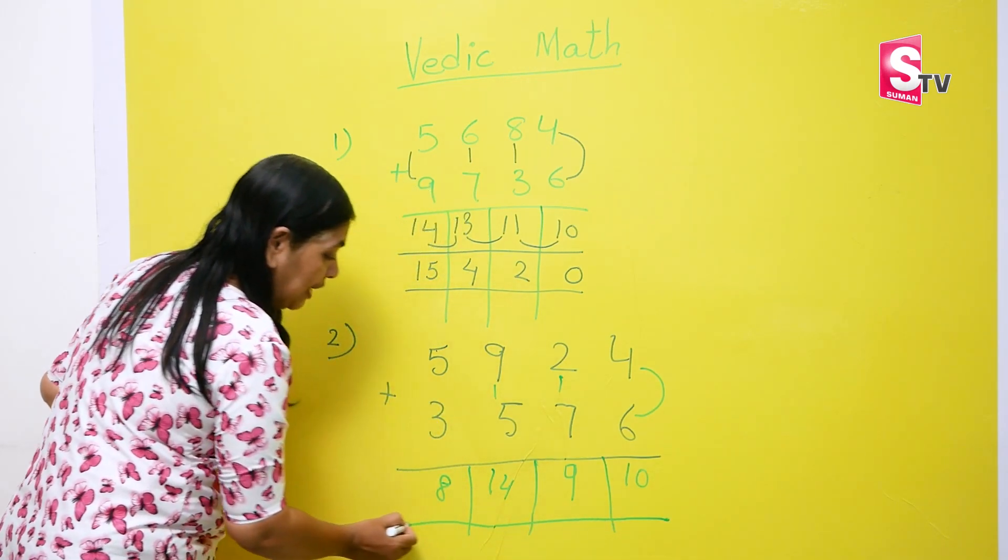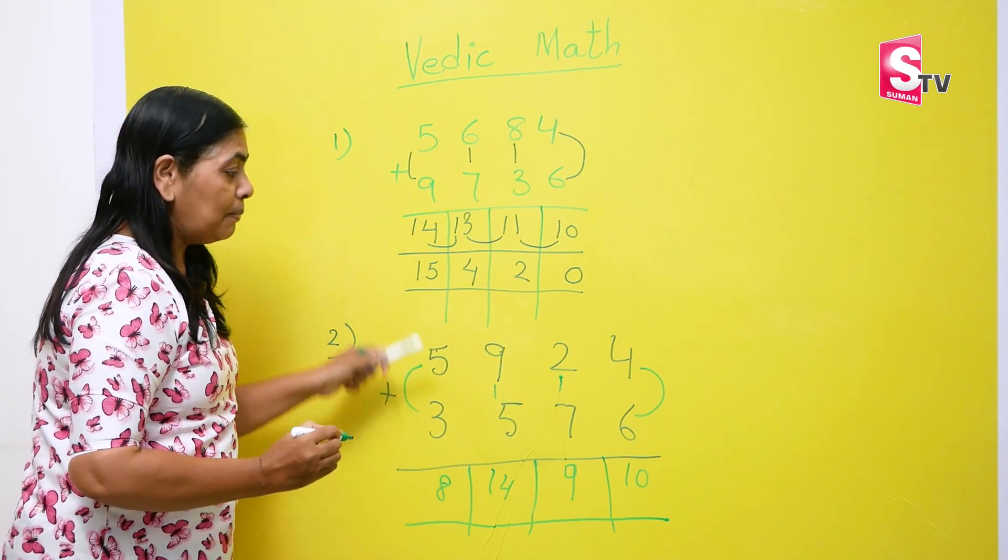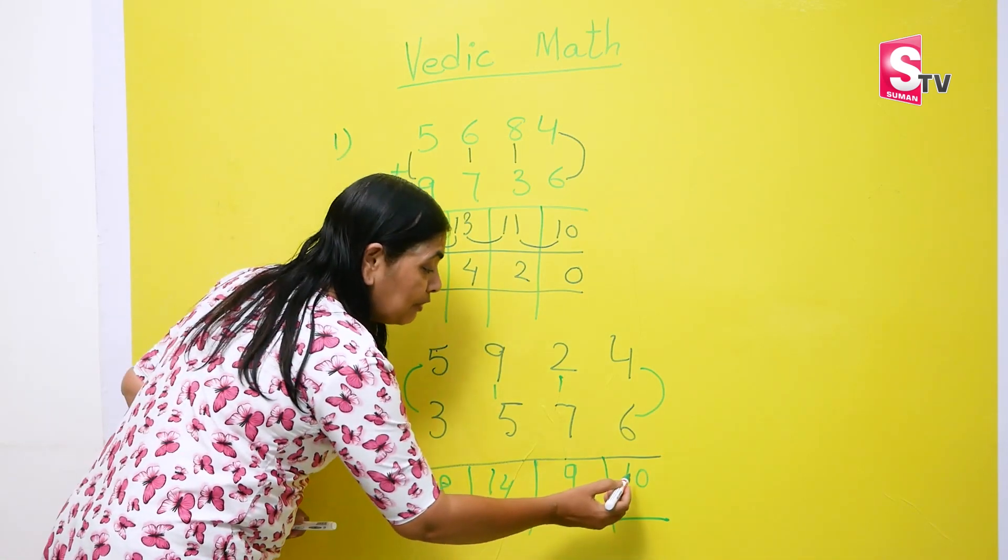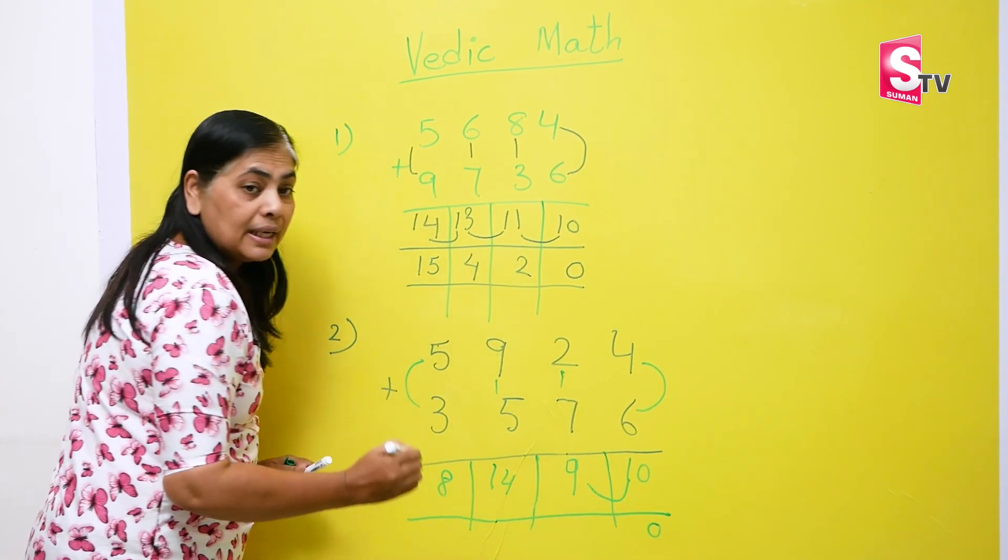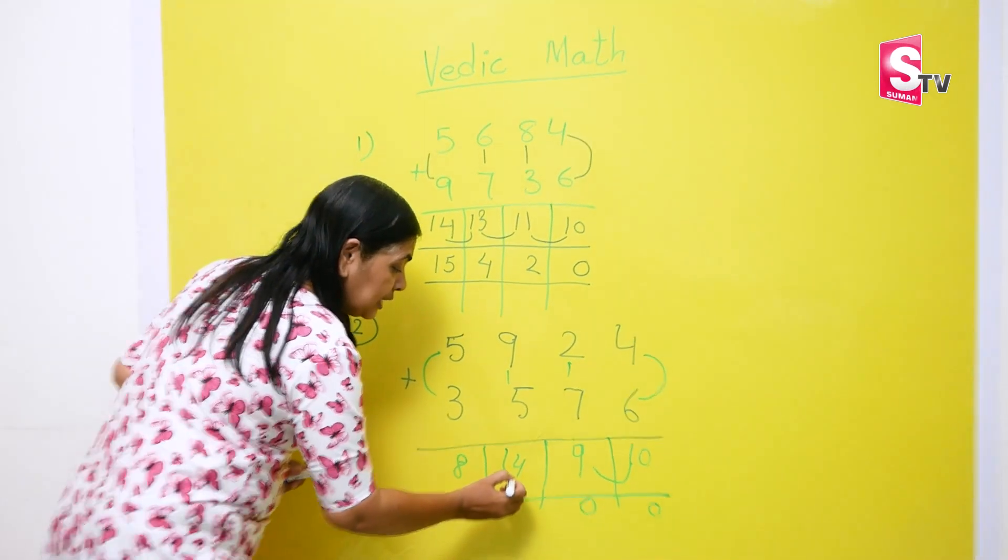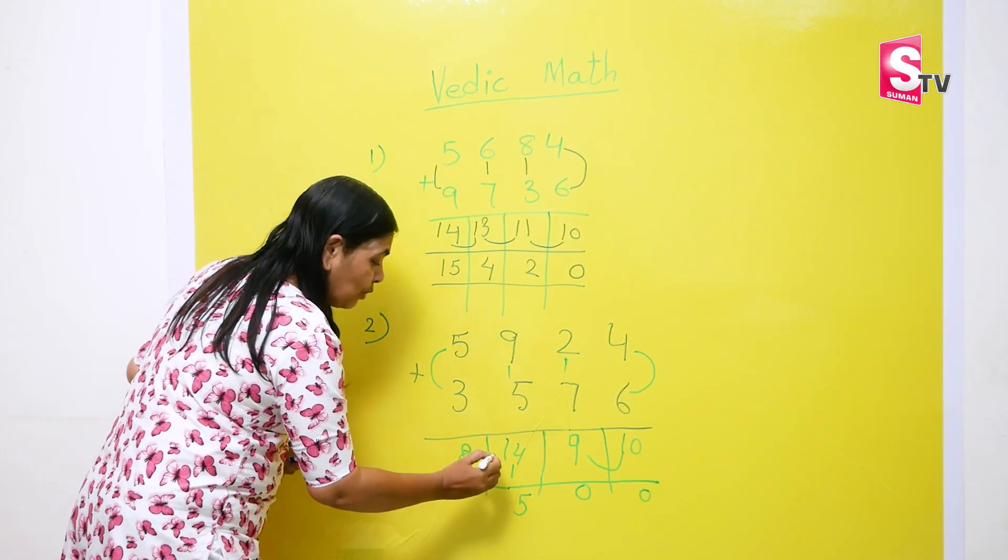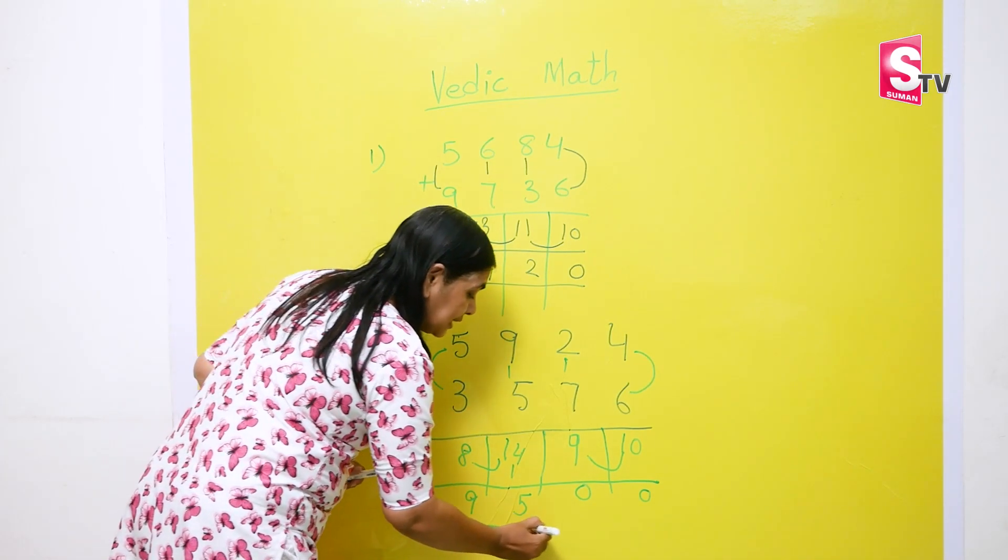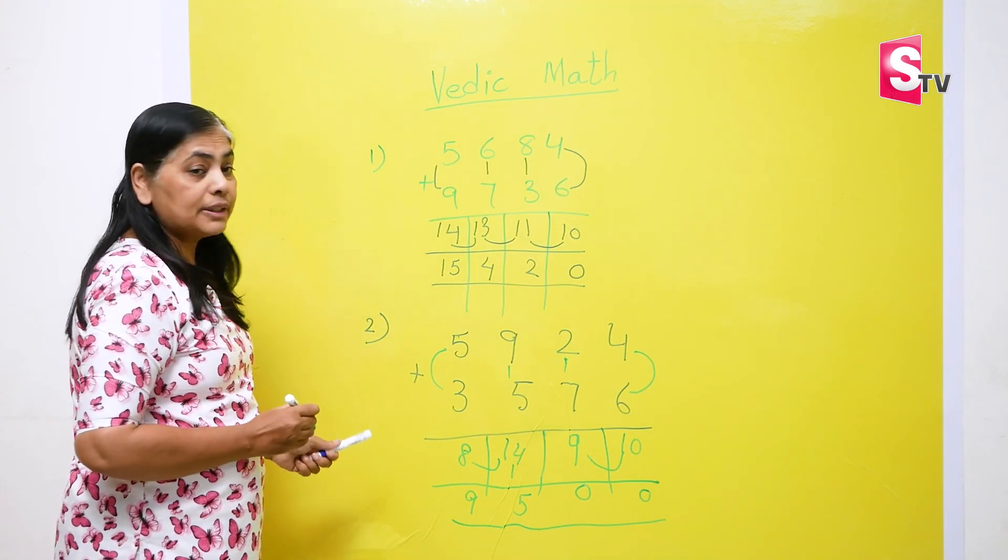Now, it's time to write final answer. After adding all the numbers individually, we are going to write final answer. So, what we'll be doing? We'll write 0 as it is. 1 goes to 9. 9 and 1 becomes 10. So, I write 0 here. And 1 goes here. So, 4 and 1, 5. And 1 goes to 8. 8 and 1, 9. So, our final answer is 9500. I hope you understood this concept.